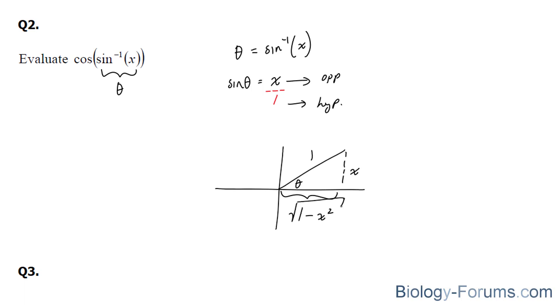Once again, we'll use the same logic and technique as before. We're going to pretend that we're finding cosine here. So cosine is the adjacent, which is this, over the hypotenuse, and therefore our answer is the square root of 1 minus x squared. And that's it.